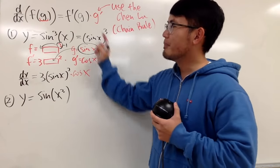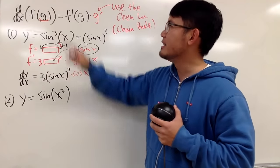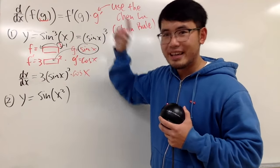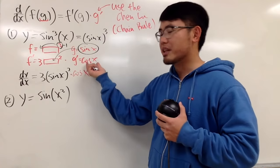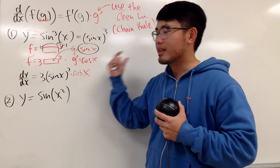And then you multiply by the derivative of g, which is this portion. That's the chandu part.